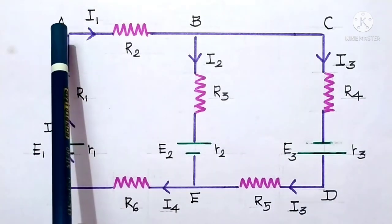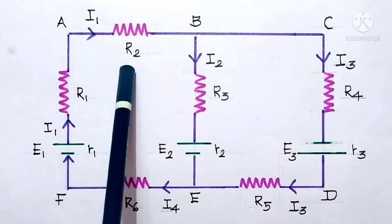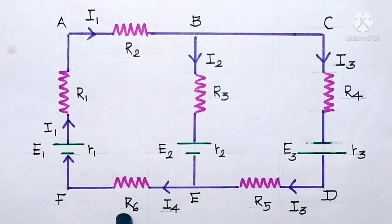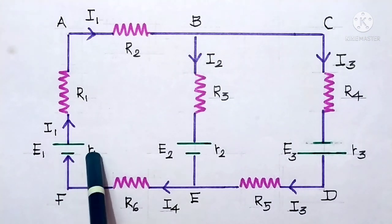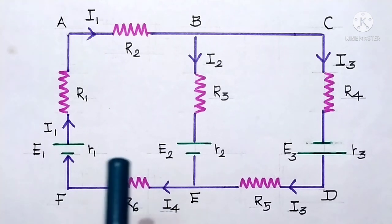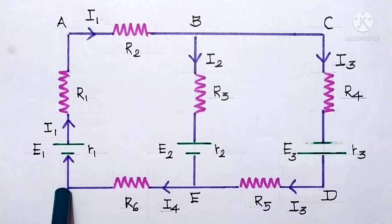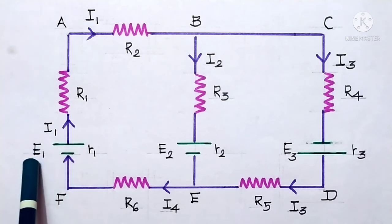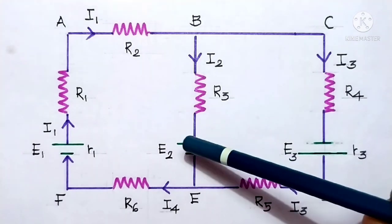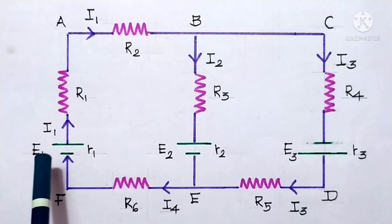Now let us consider another loop: A, B, E, F, A. In a similar manner: I1 R2, then I2 R3, then I2 times internal resistance R2, then I4 R6, then I4 times internal resistance R1, then I1 R1. We sum them all up, and this sum should equal the sum of the EMFs, E1 and E2. For E1, the current moves from negative to positive, so E1 is taken as plus. But in this case, the current is moving from the positive terminal to the negative terminal, so E2 is taken as negative — giving us E1 minus E2.